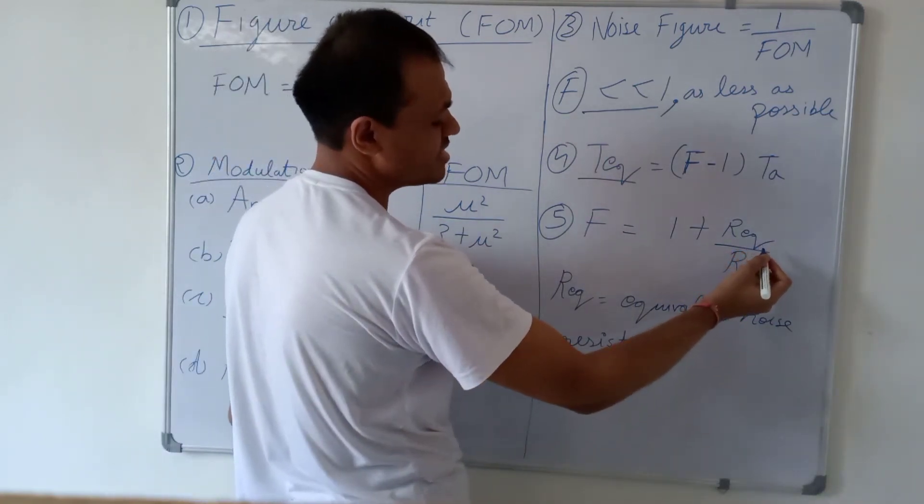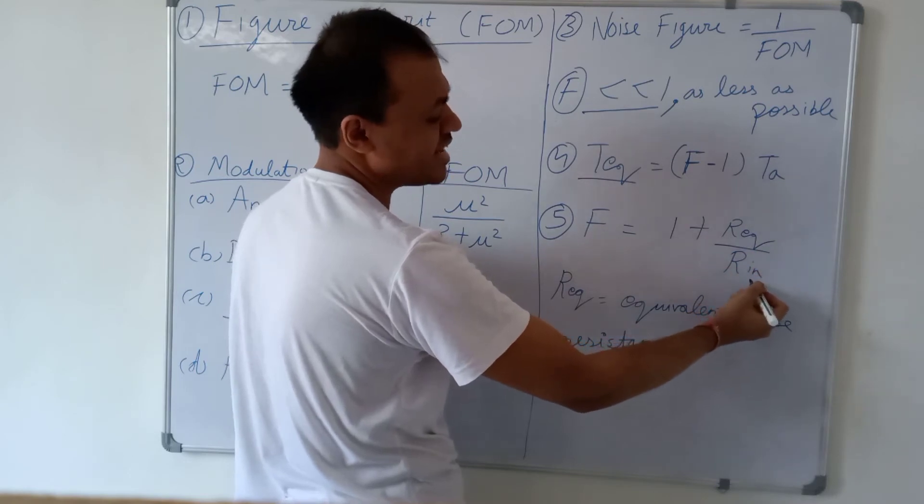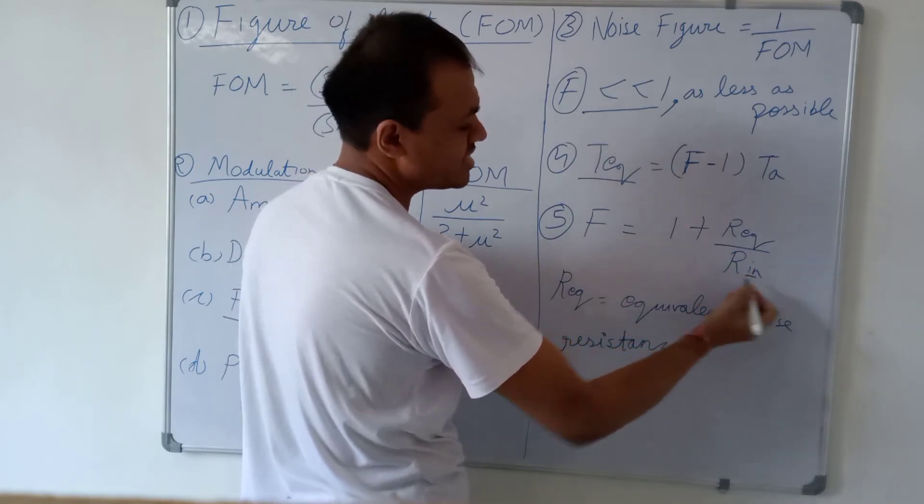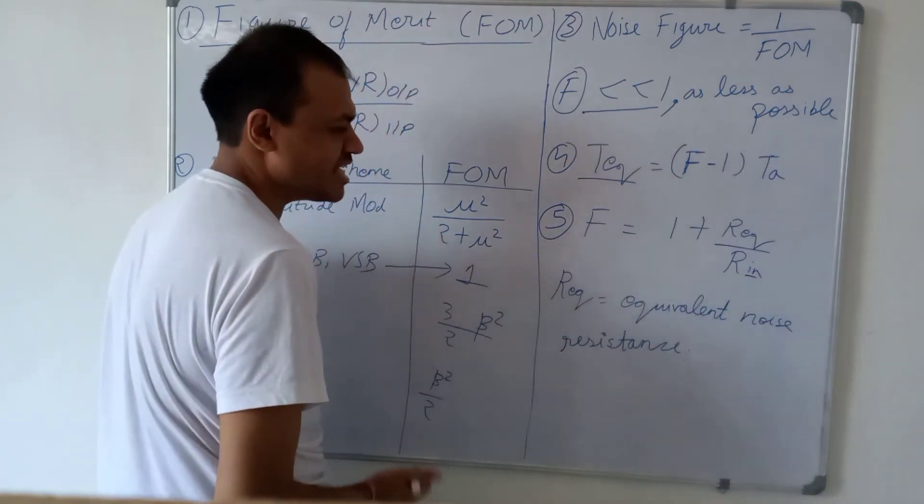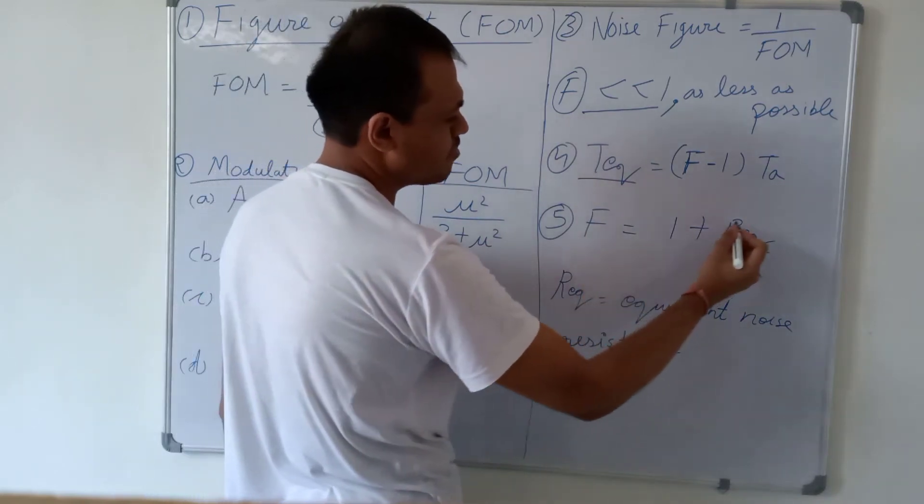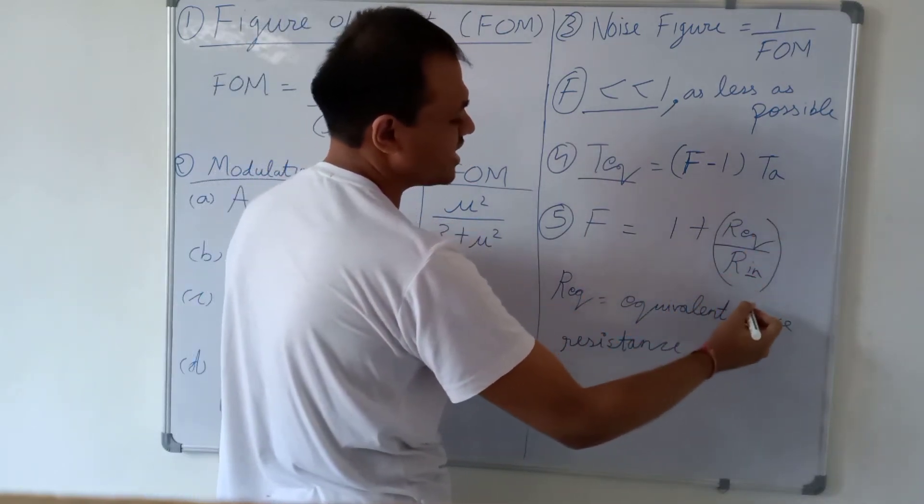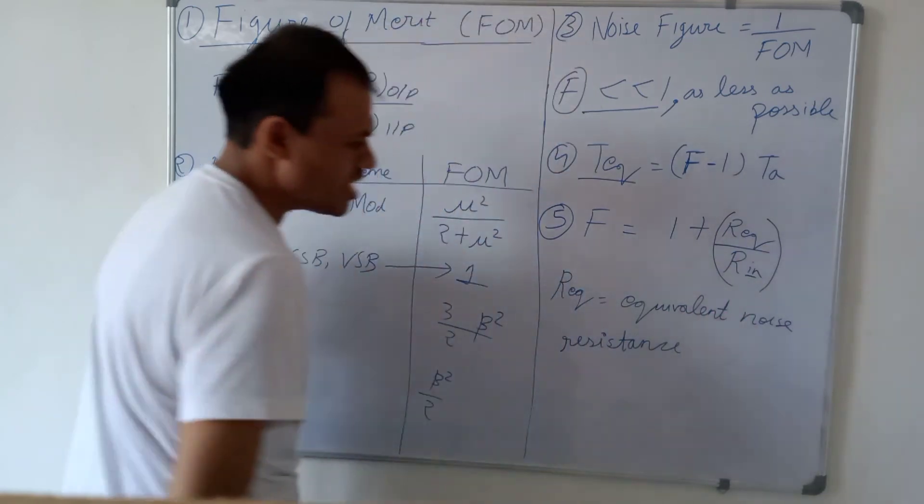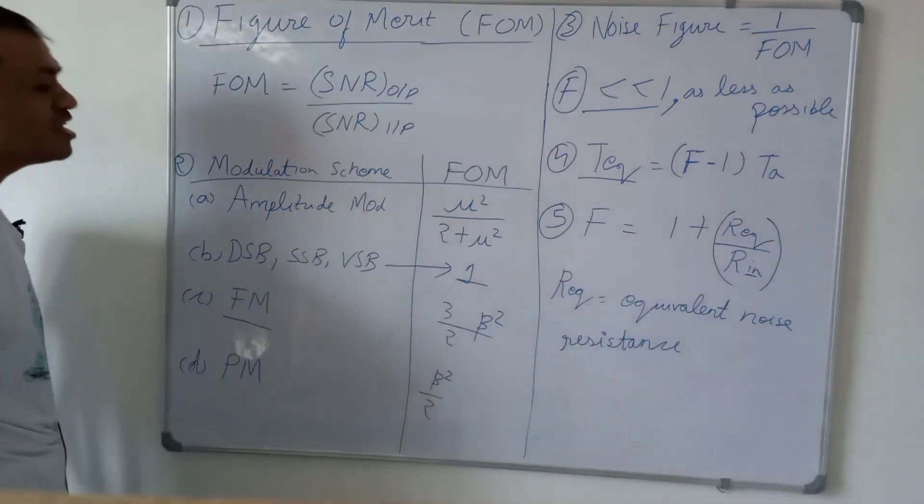And also if R equivalent is the equivalent noise resistance, R input, R in is the input resistance, the noise figure is 1 plus R equivalent upon R in, where R eq is the equivalent noise resistance.